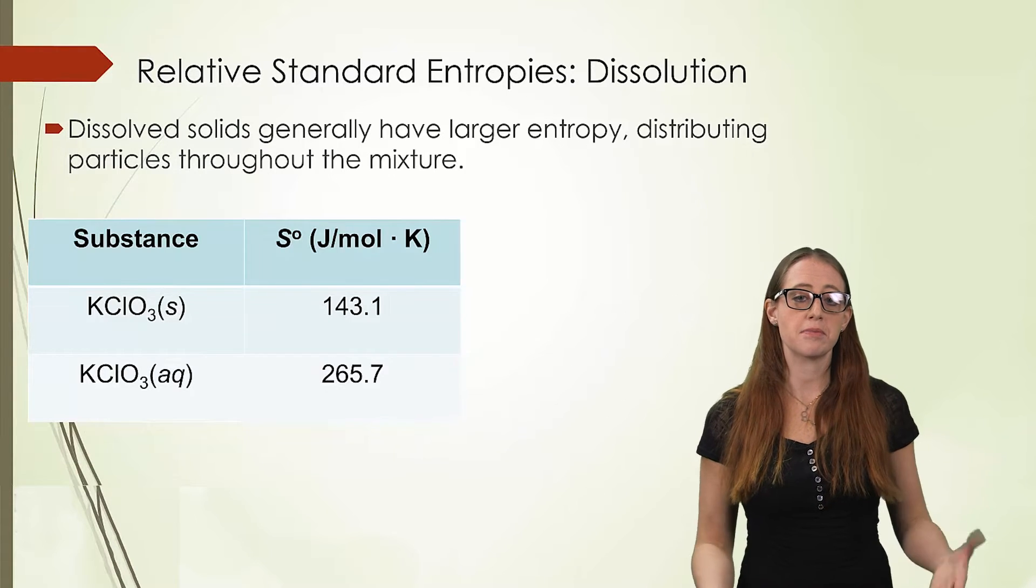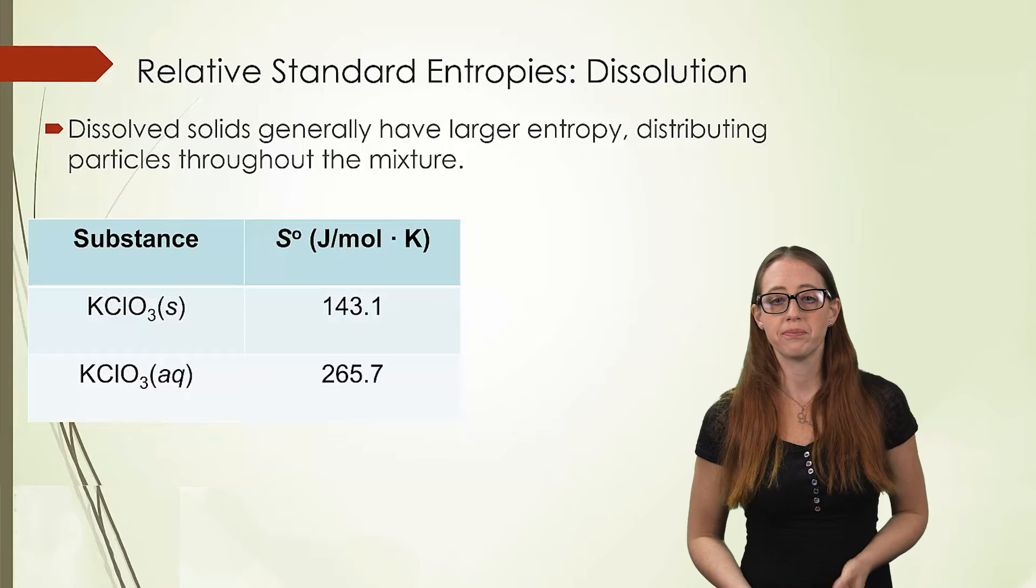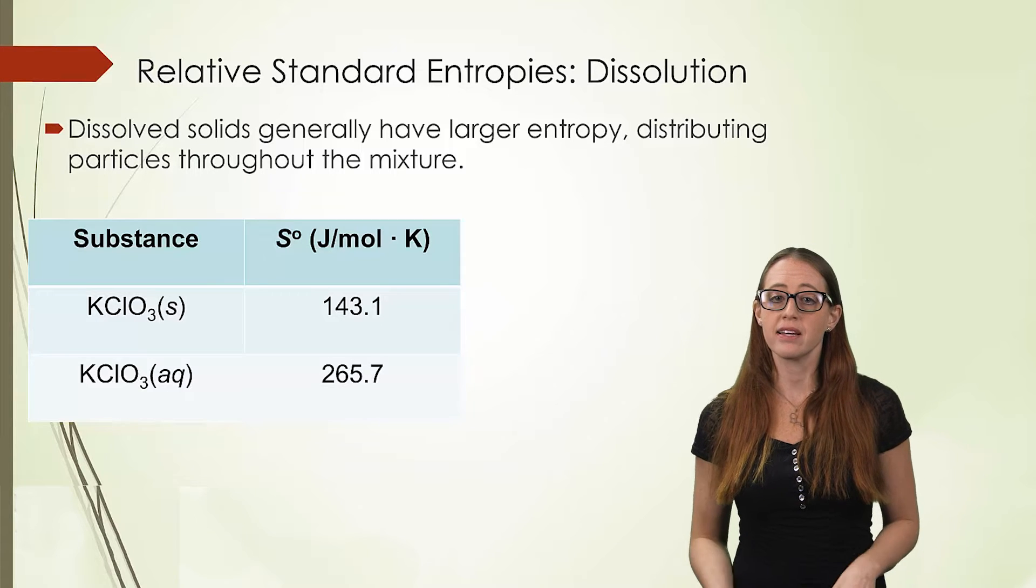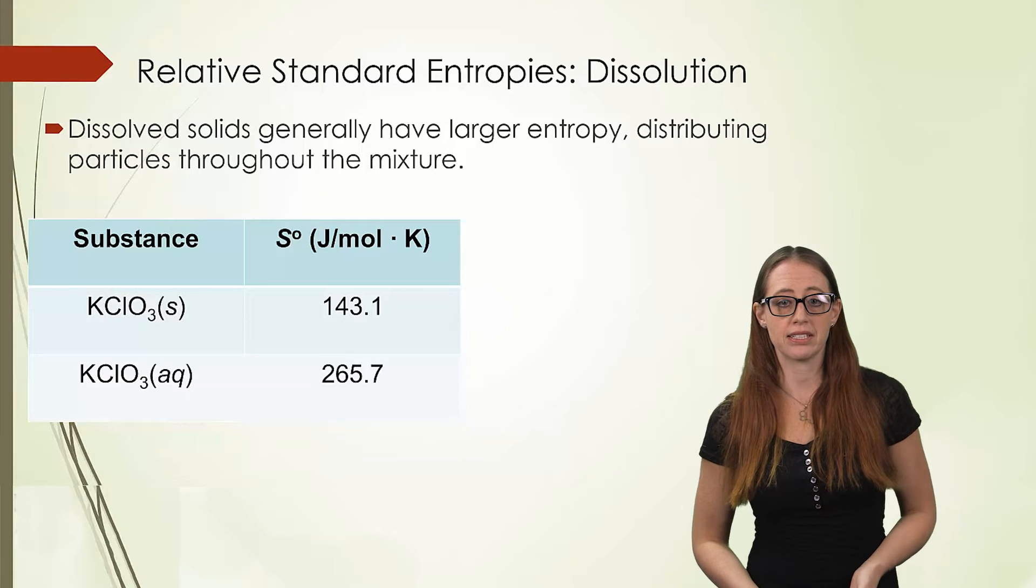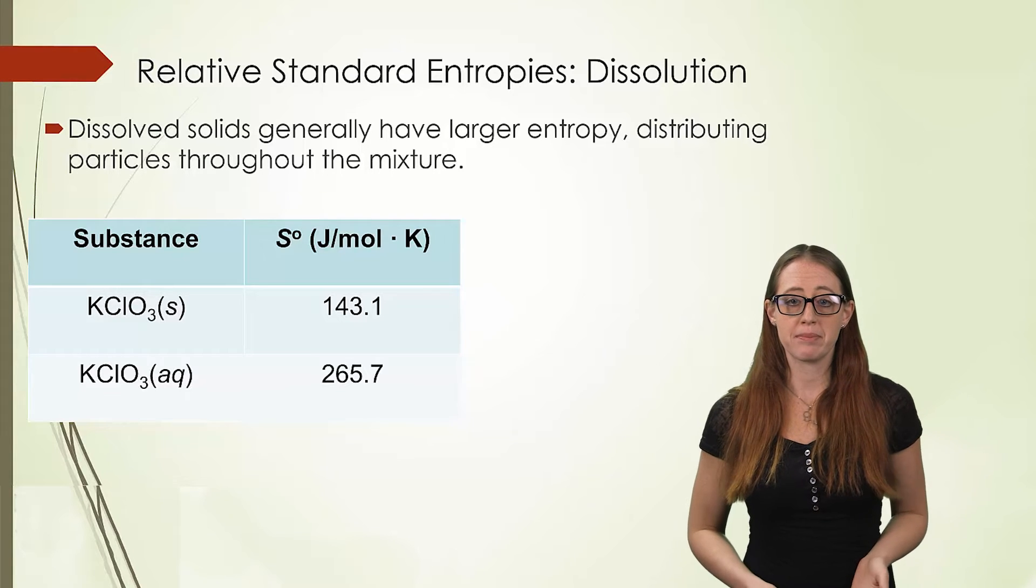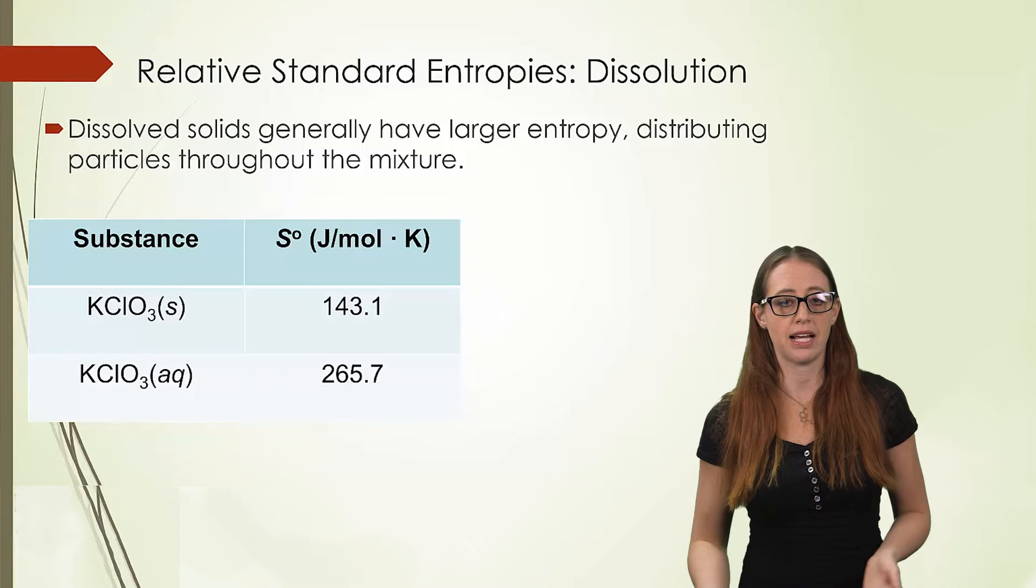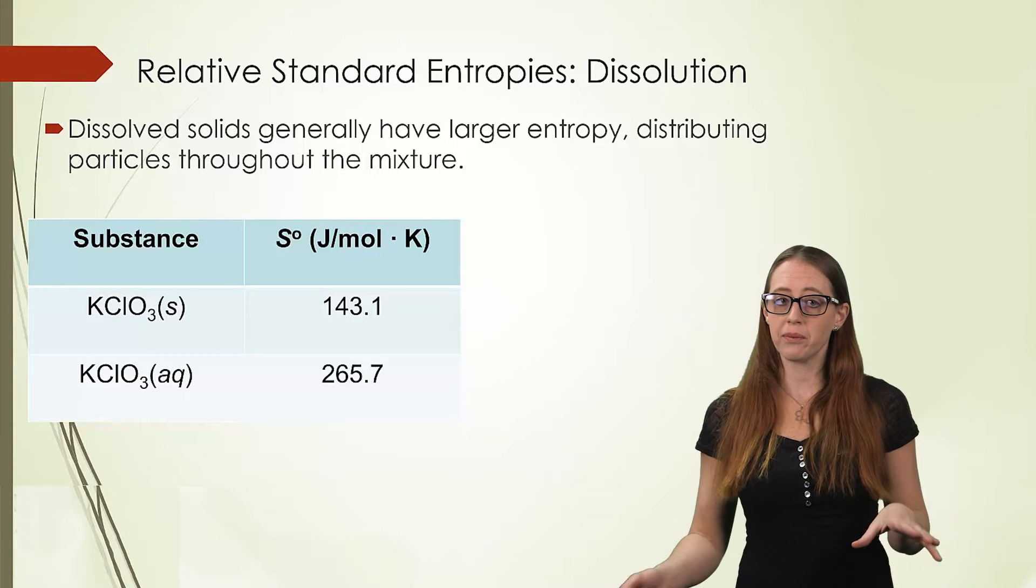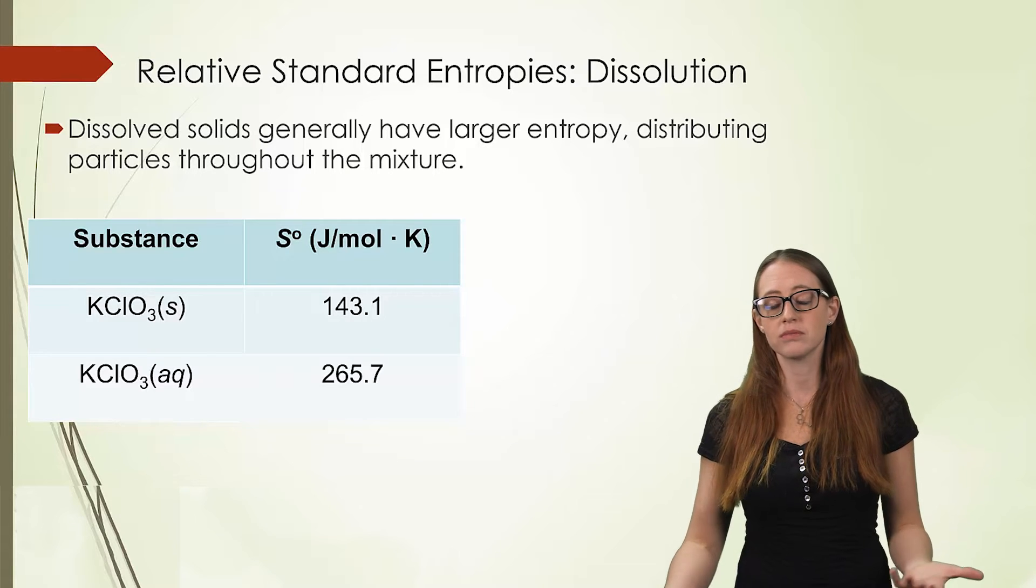This next concept is very similar to phases, though a little bit different. Let's talk about dissolved solids. If you dissolve a solid, this is generally going to increase your entropy, since it distributes the particles throughout the mixture. Here we have an example of this. We have aqueous potassium chlorate having a higher entropy than solid potassium chlorate. This too should feel relatively intuitive, that when you dissolve a species in another species, it's going to get more random, or less ordered.